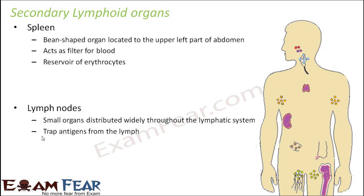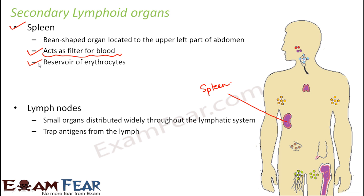Now let us talk about the secondary lymphoid organs. The first is the spleen, a bean-shaped organ located in the upper left part of the abdomen. It acts as a filter for blood and is also a reservoir of erythrocytes — red blood cells. Whenever blood comes to the spleen, it filters out unnecessary material from the blood.